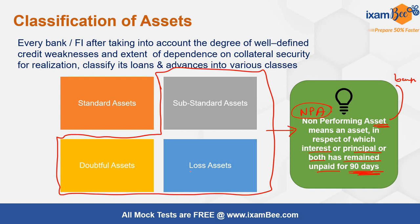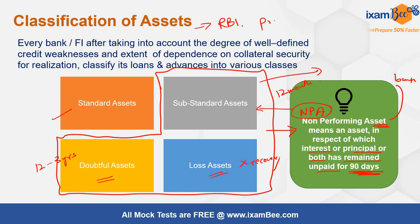Within NPA, we have three subcategories. First is substandard — up to 12 months of NPA. From 12 months to up to three years, they are known as doubtful. If there is no possibility of recovery, they are classified as loss assets. Standard assets are those which are repaying on time as per the loan agreement. This classification is mandatorily given by RBI and is called the prudential norms for asset classification. Based on this classification, there are provisioning norms which banks have to follow.